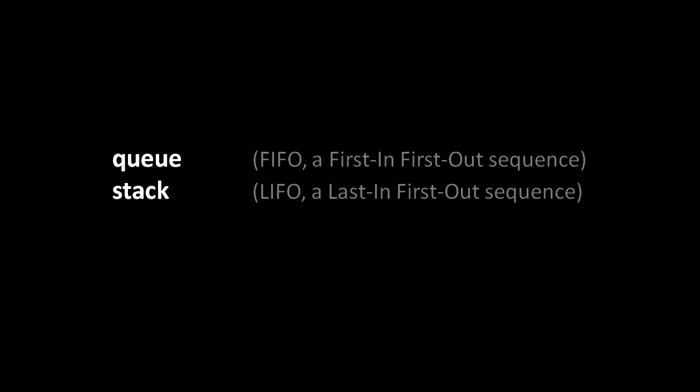A stack, like the name implies, is like a stack of plates — you only place plates one at a time on top, and you only remove plates by taking them off the top one by one. We've already discussed stacks in the context of the call stack: each function call adds a new frame to the top of the stack, and when the current function returns, the frame on top is removed. This pattern is also known as LIFO — last in, first out — the last thing added into the list is the first thing next removed.